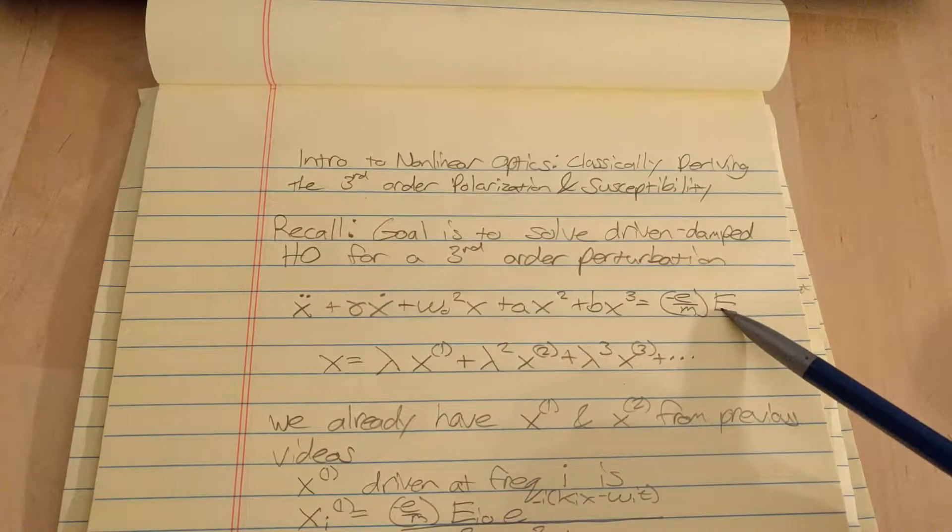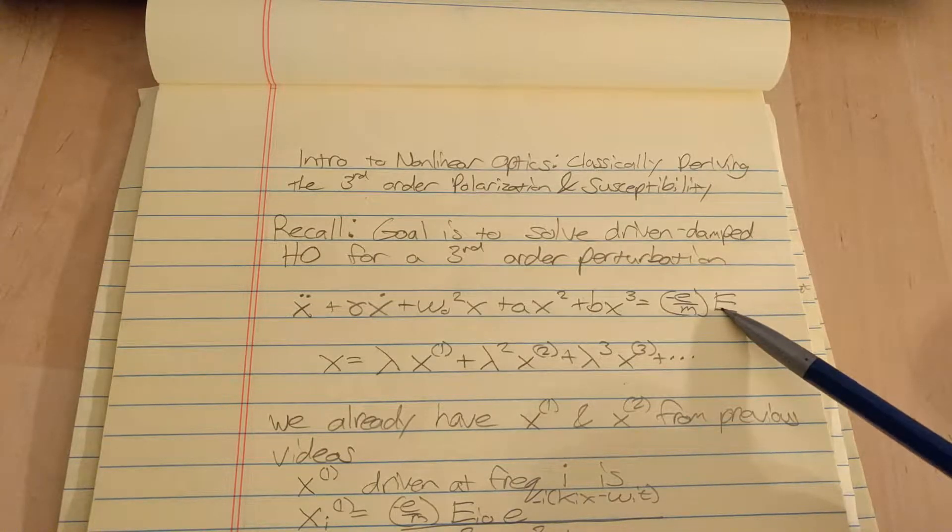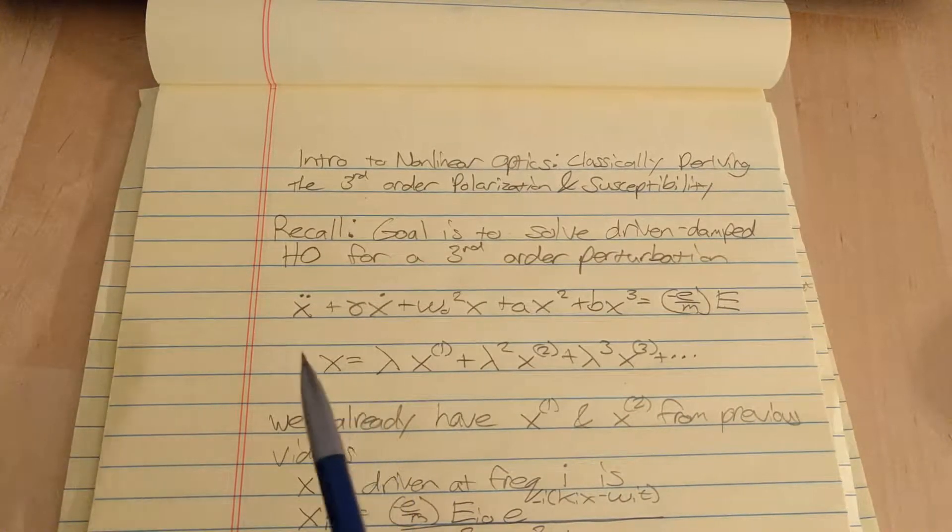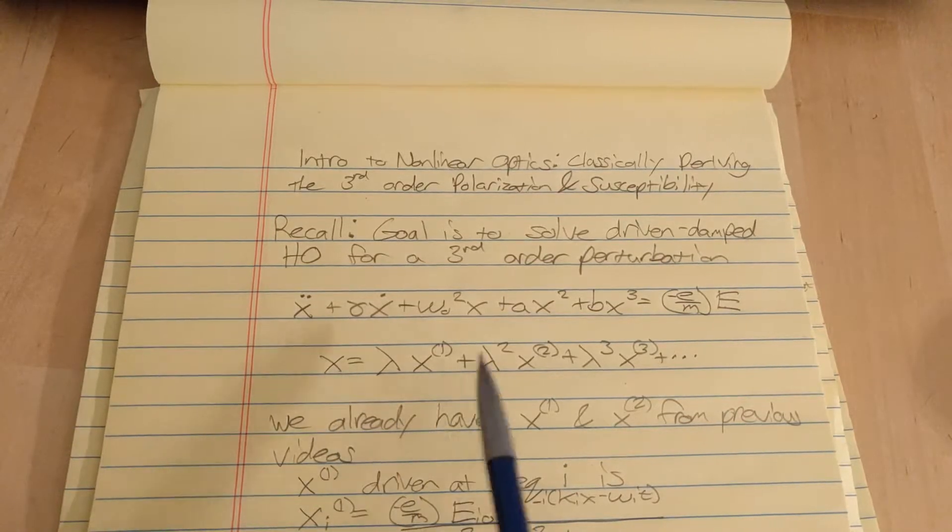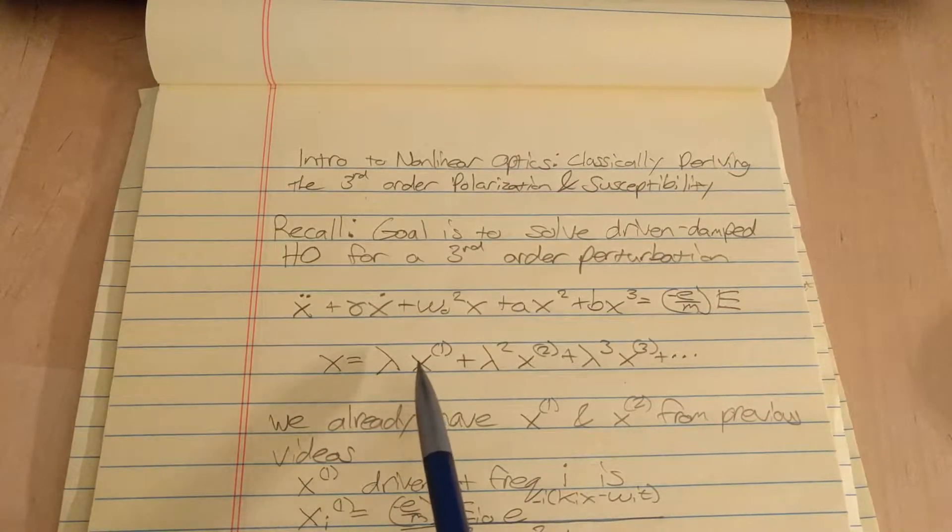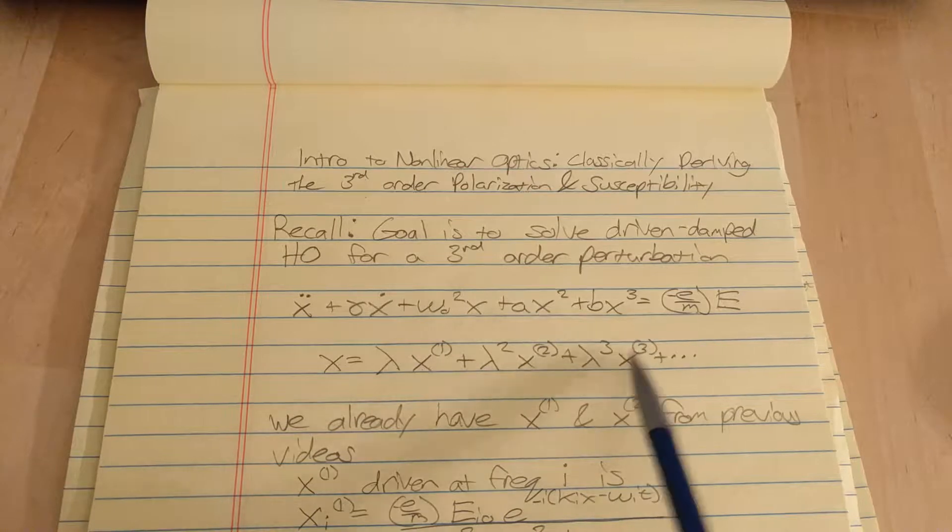So this equation here is the driven damped harmonic oscillator, and for perturbations of different orders we assume our solution can be described by first-order perturbation plus second-order plus third-order and so on.